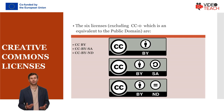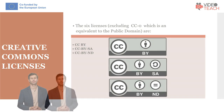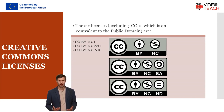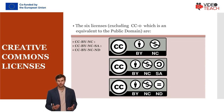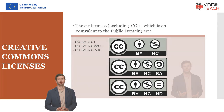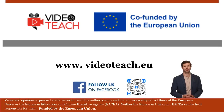CC BY NC SA allows re-users to distribute, remix, adapt, and build upon the material in any medium or format for non-commercial purposes only, and only so long as attribution is given to the creator. CC BY NC SA also requires that any modified material be licensed under identical terms. CC BY NC ND allows re-users to copy and distribute the material in any medium or format in unadapted form only, for non-commercial purposes only, and only so long as attribution is given to the creator.